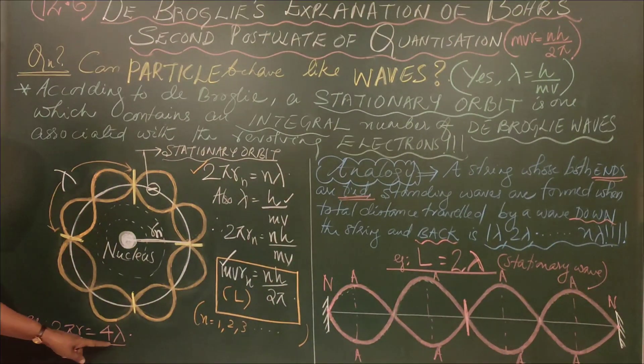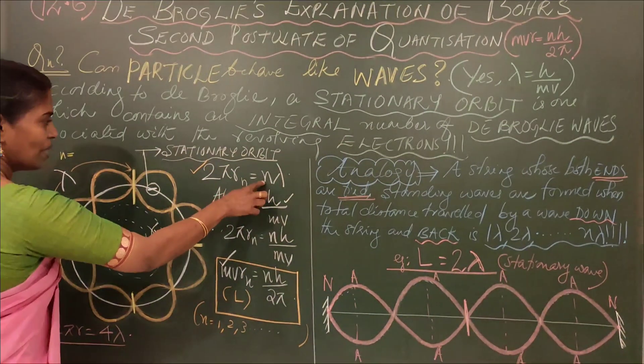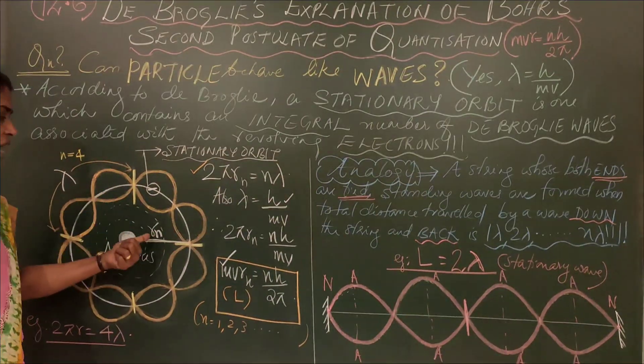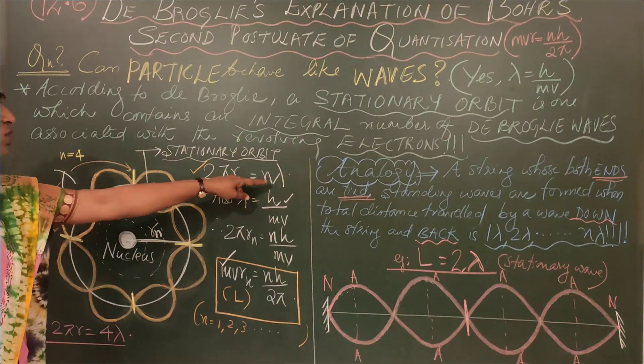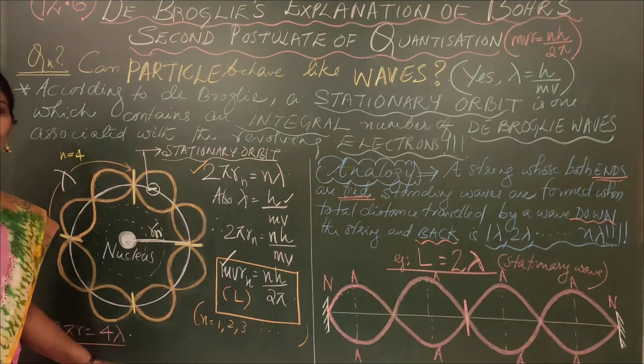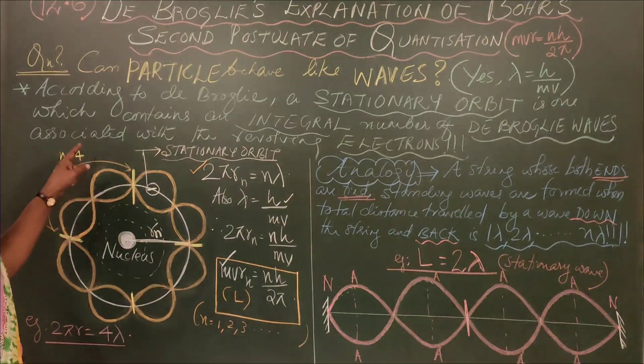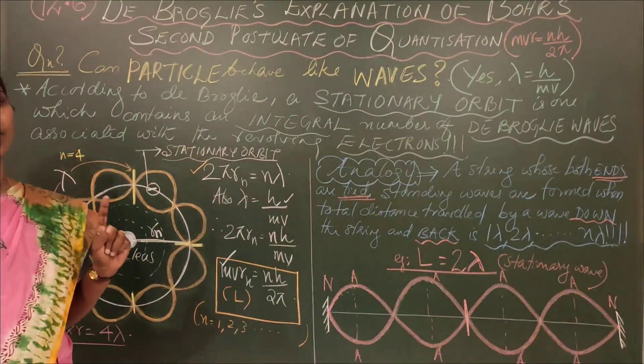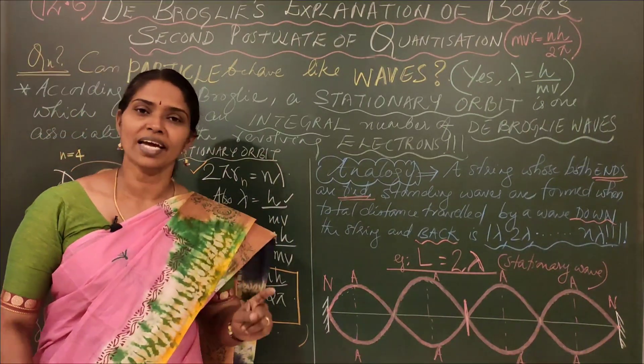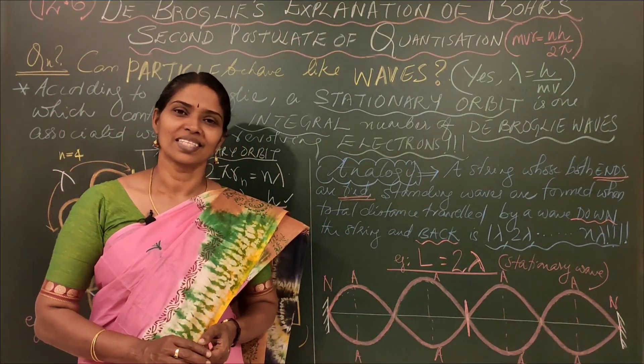Here you have 4λ. This is an example: 2πr = 4λ, and n has the value 4. So this stands for r4, meaning n=4. If it is n=4, you will get 4λ. Inside this 2πr length, you will have only 4 waves. So that is how de Broglie explained Bohr's second postulate. Hope it is clear. Thank you for listening.